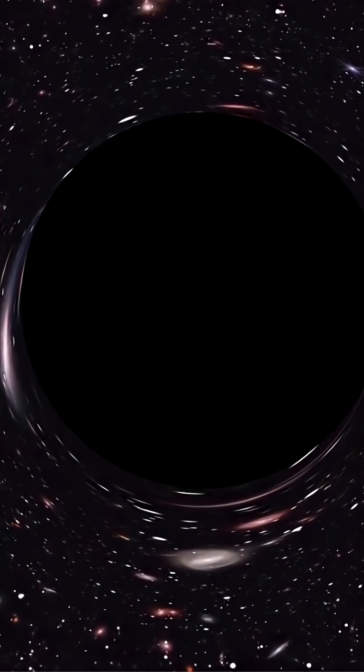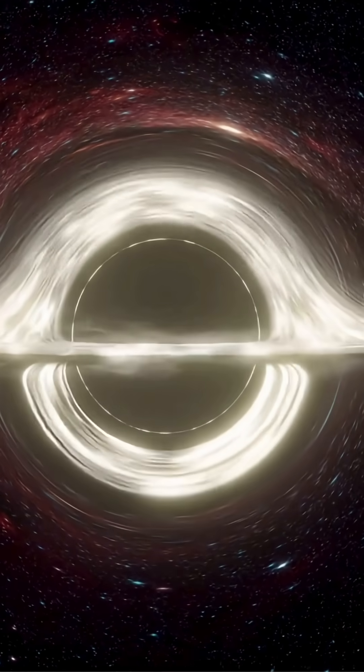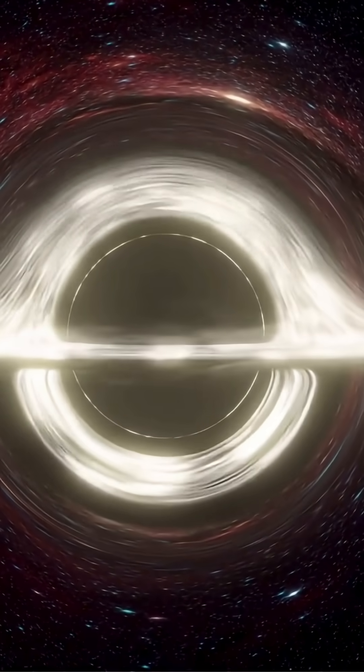Black holes have gravity so strong that nothing, not even light, can escape their pull. That means any light that gets close either vanishes or gets warped. Some physicists say even space and time bend near them. So how is it possible we've seen one?